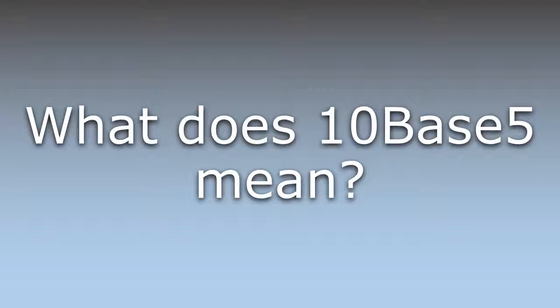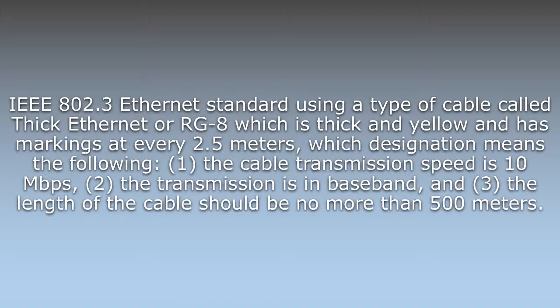10Base5 is an IEEE 802.3 Ethernet standard using a type of cable called thick Ethernet or RG8, which is thick and yellow and has markings at every 2.5 meters. The designation means the following: 1. The cable transmission speed is 10 Mbps. 2. The transmission is in baseband. And 3. The length of the cable should be no more than 500 meters.